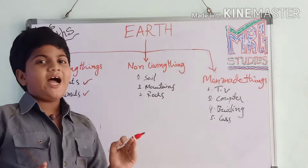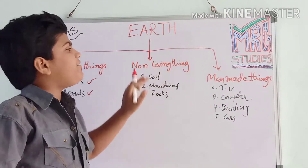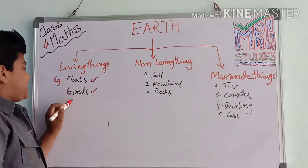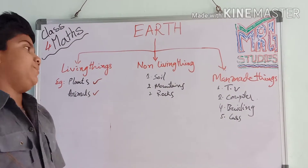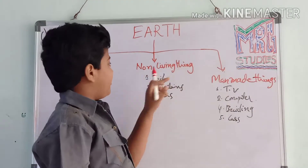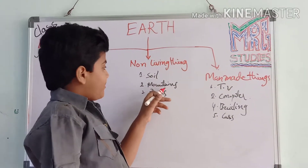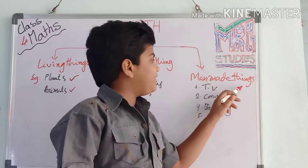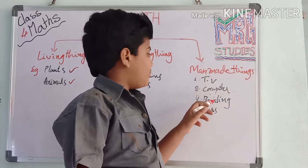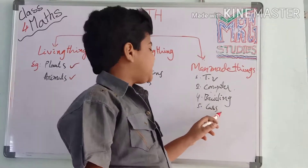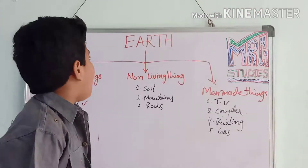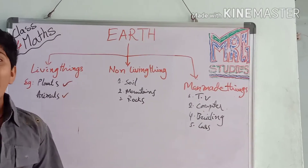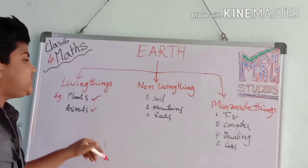First we will read the earth. What is living in the earth? First, living things: plants and animals, and human beings. Next, non-living things: soil, mountains, rocks. Next, man-made things: TV, computer, buildings, cars. This is our earth — living, non-living things, and man-made things.